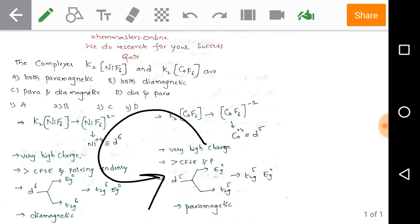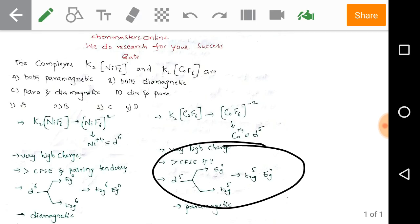Observe the d⁵ electron splitting. For the t₂g and eg splitting, the total 5 electrons are placed in t₂g only. This is due to the high charge, which leads to pairing of electrons.